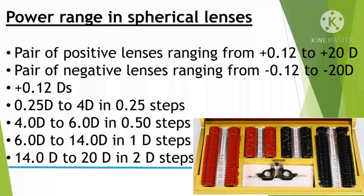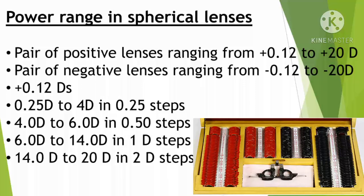The last lens is 20 D. So 32 pairs of positive and 32 pairs of negative spherical lenses range from 0.12 D to 20 D. Spherical lenses are usually used for correction of myopia and hypermetropia.